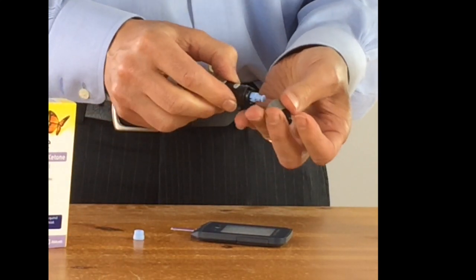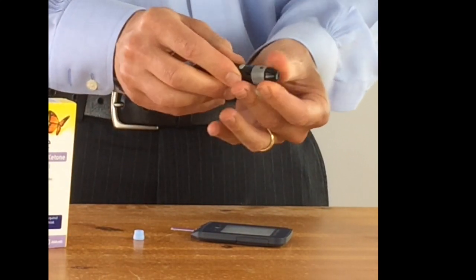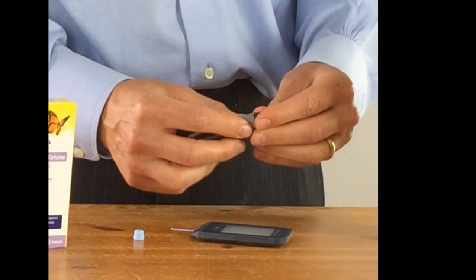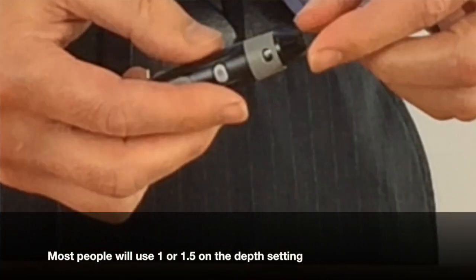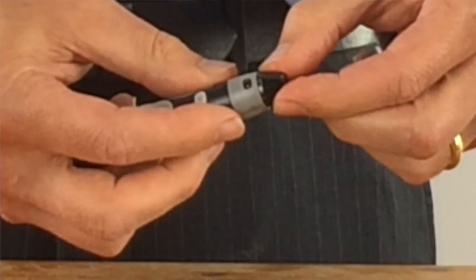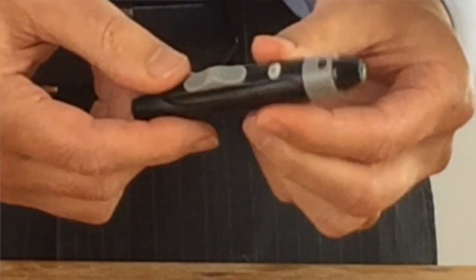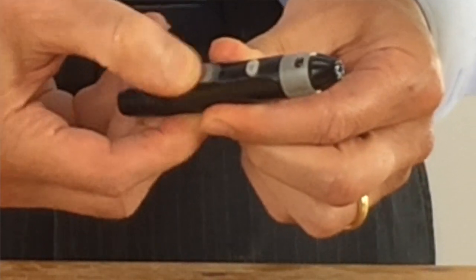You put the cover on and then set the numbers according to how thick your skin is. For me it's usually about one and a half, and you adjust it by twisting this top black knob. You arm the device by pulling down. You'll hear a click.